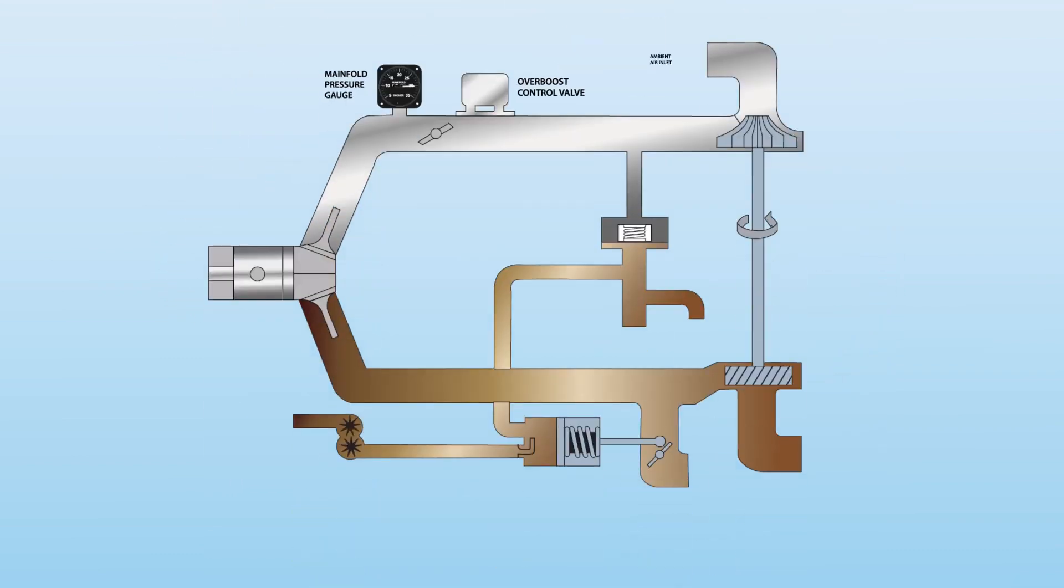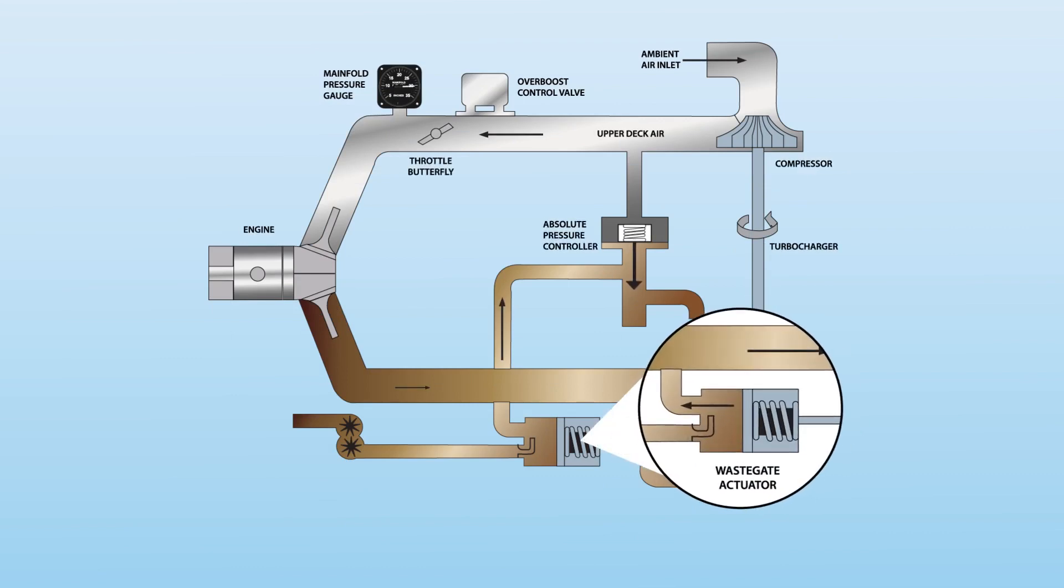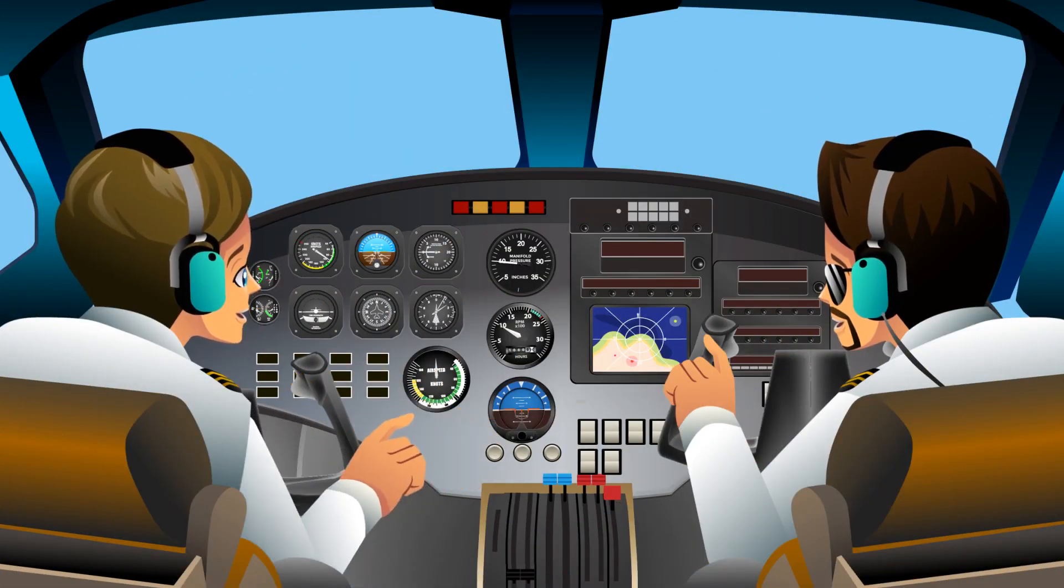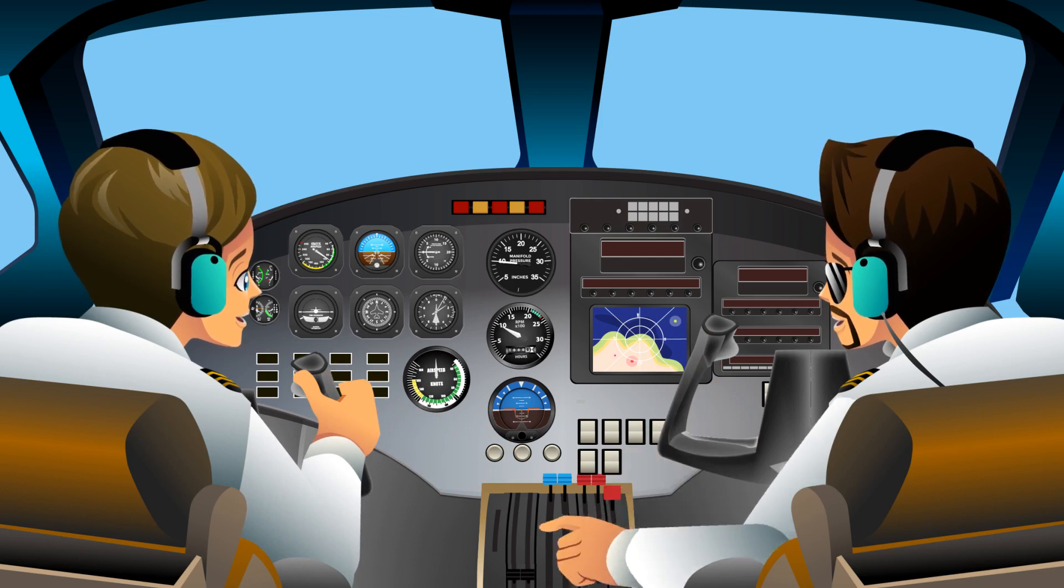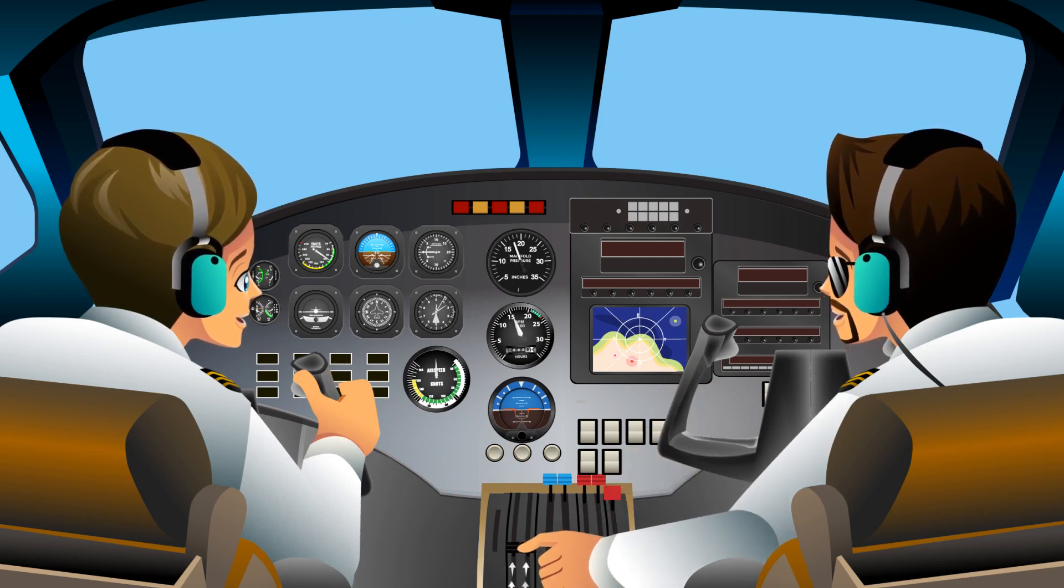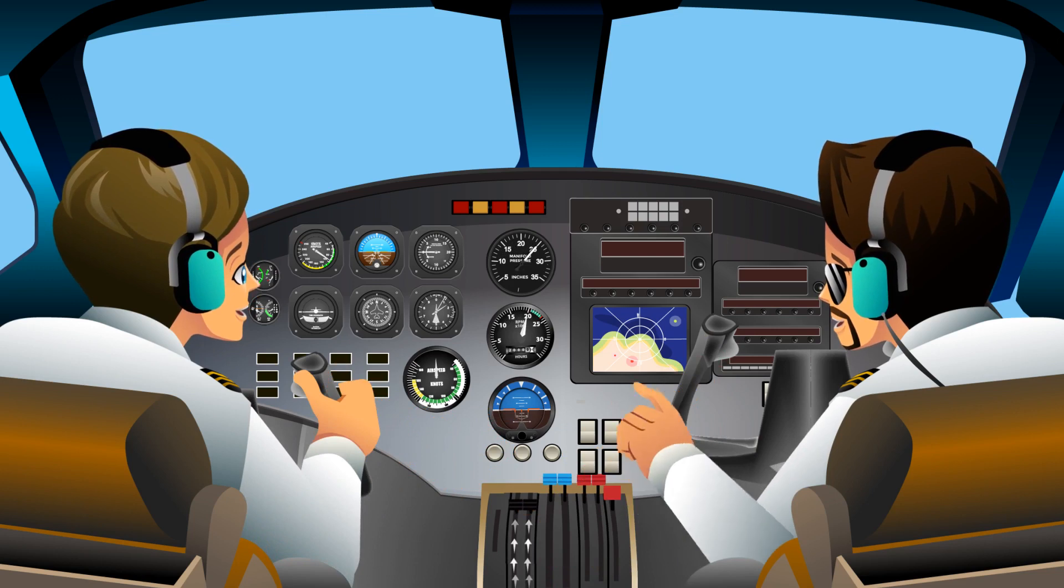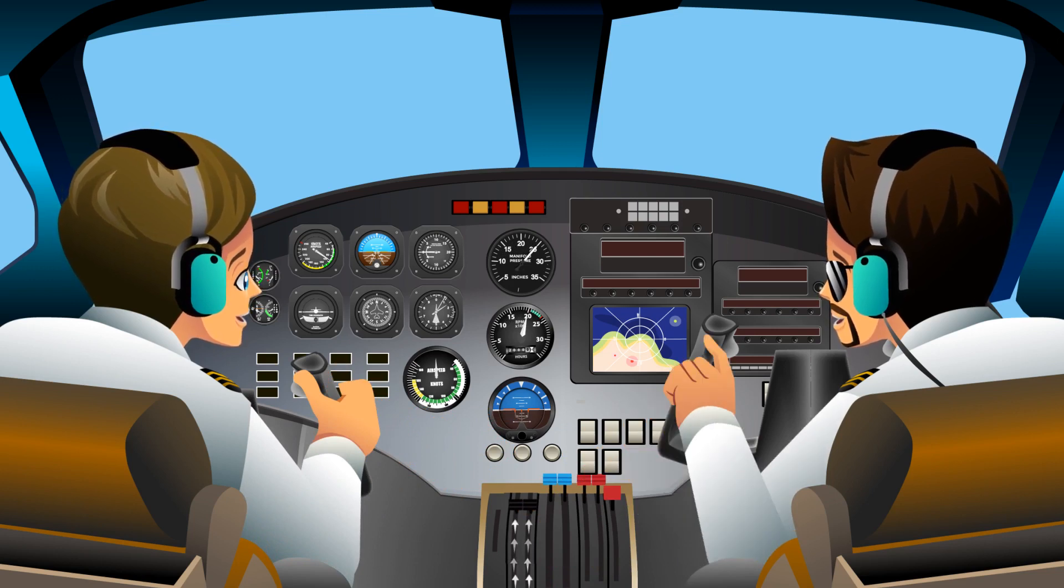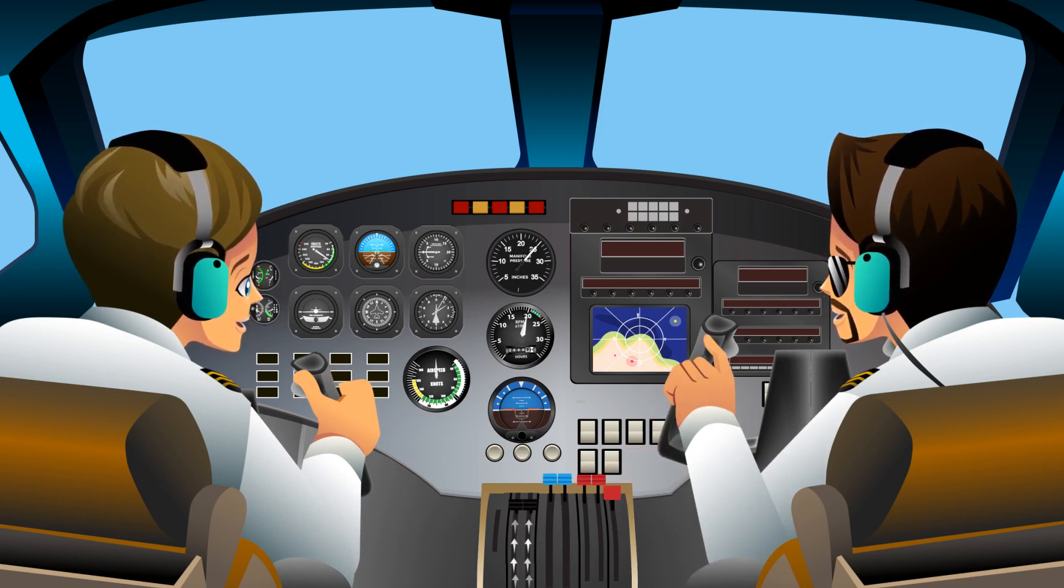The position of the wastegate is governed by a pressure-sensing control mechanism linked to an actuator that uses engine oil to move the spring-loaded wastegate position. The actuator is automatically positioned simply by changing the position of the throttle control. No throttle adjustment is required with changes in altitude as the pressure-sensing control mechanism simplifies turbocharging to one control: the throttle.